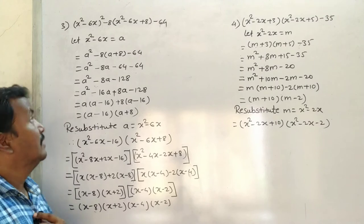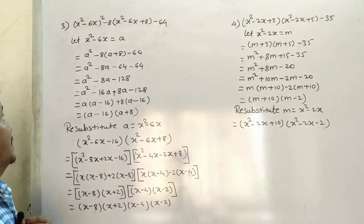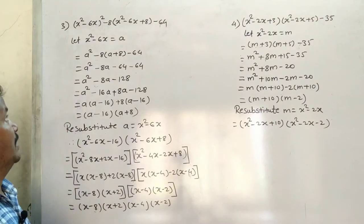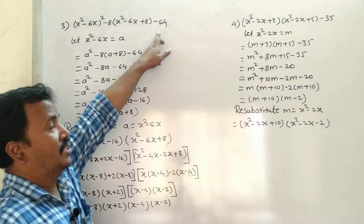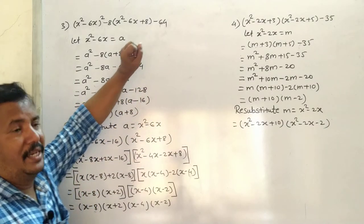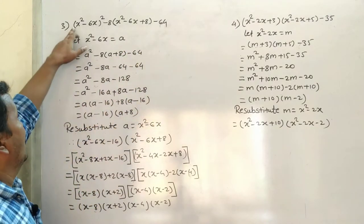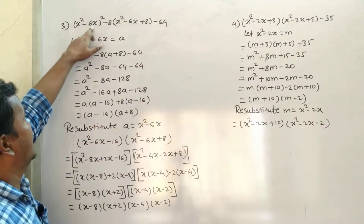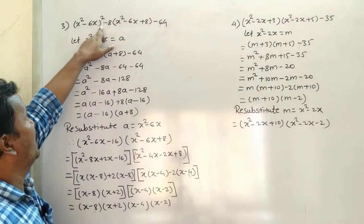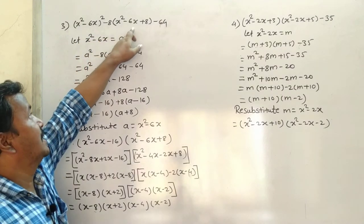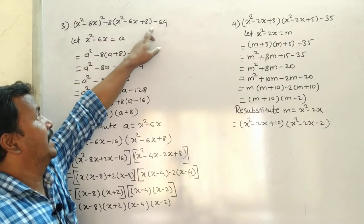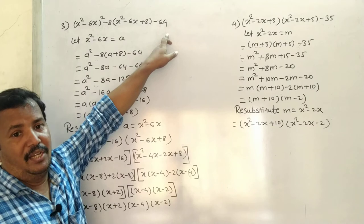Sum number 3 is: (x² - 6x)² - 8(x² - 6x) + 8 - 16. So we have (x² - 6x)² minus 8 into (x² - 6x) plus 8, minus 16.